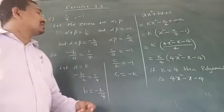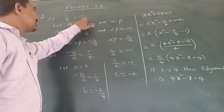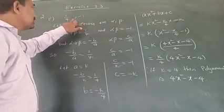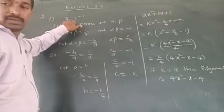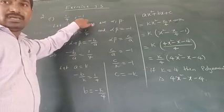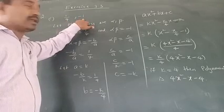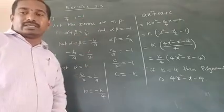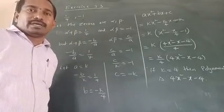So what is given? One by four and minus one. This is the sum of the zeros of a quadratic polynomial. This is the product of the zeros of the quadratic polynomial. Then we have to find the polynomial, the quadratic polynomial.